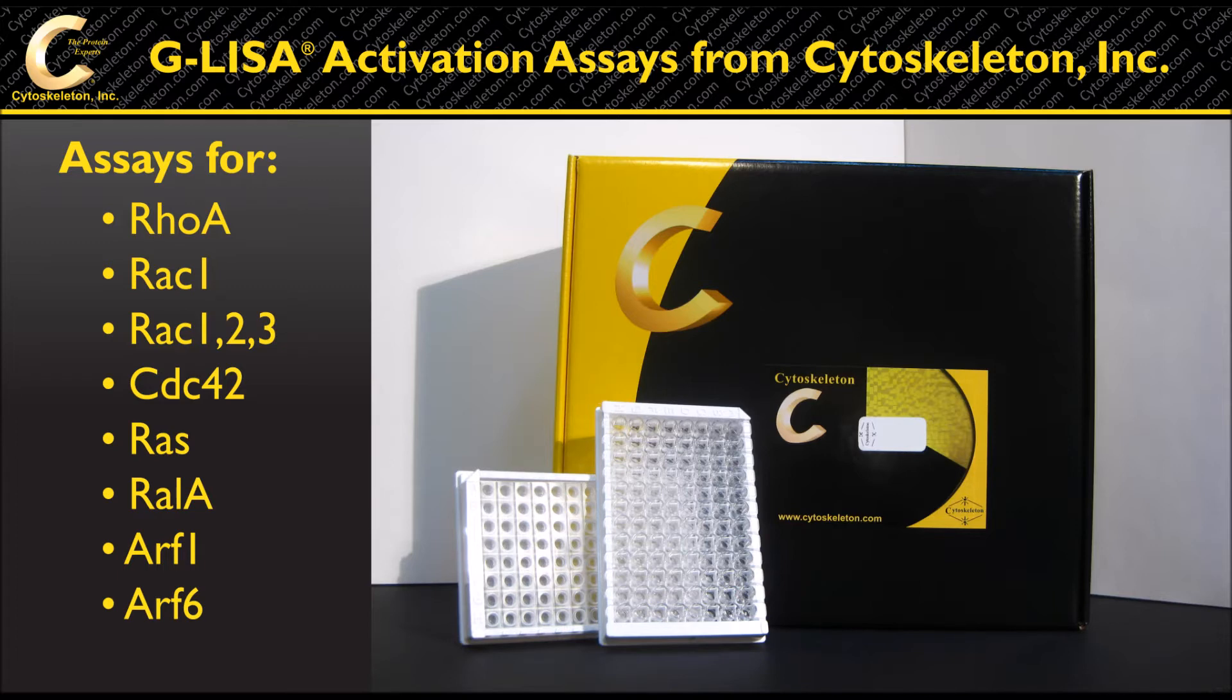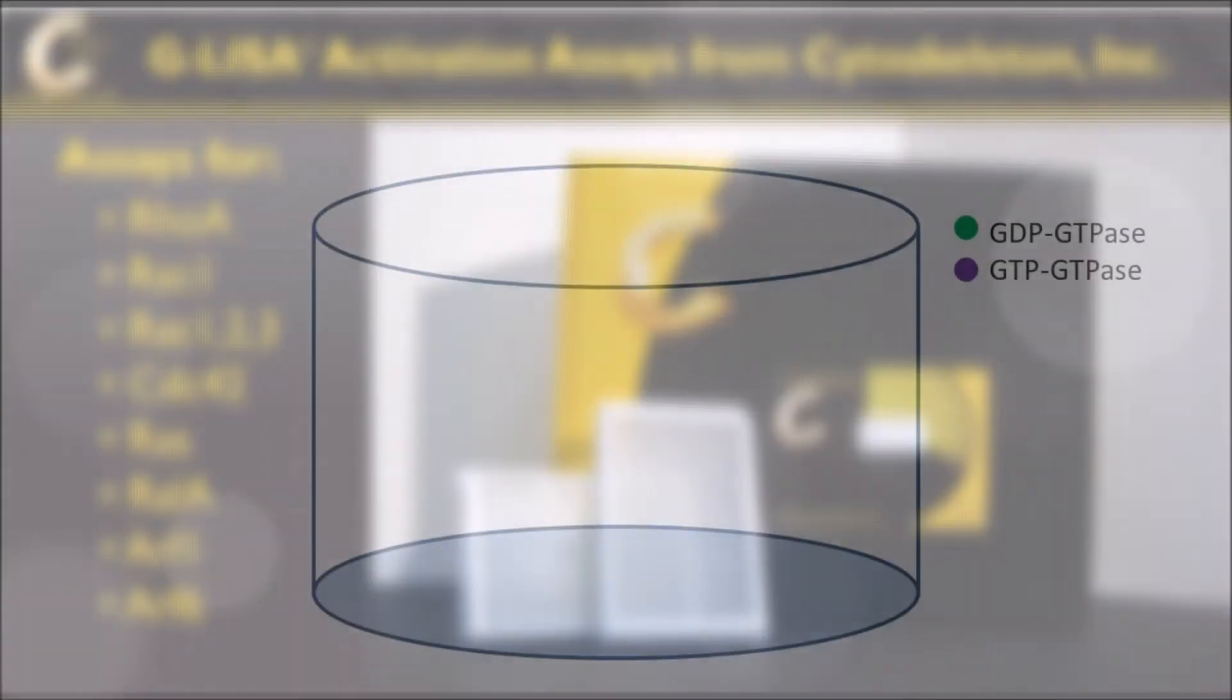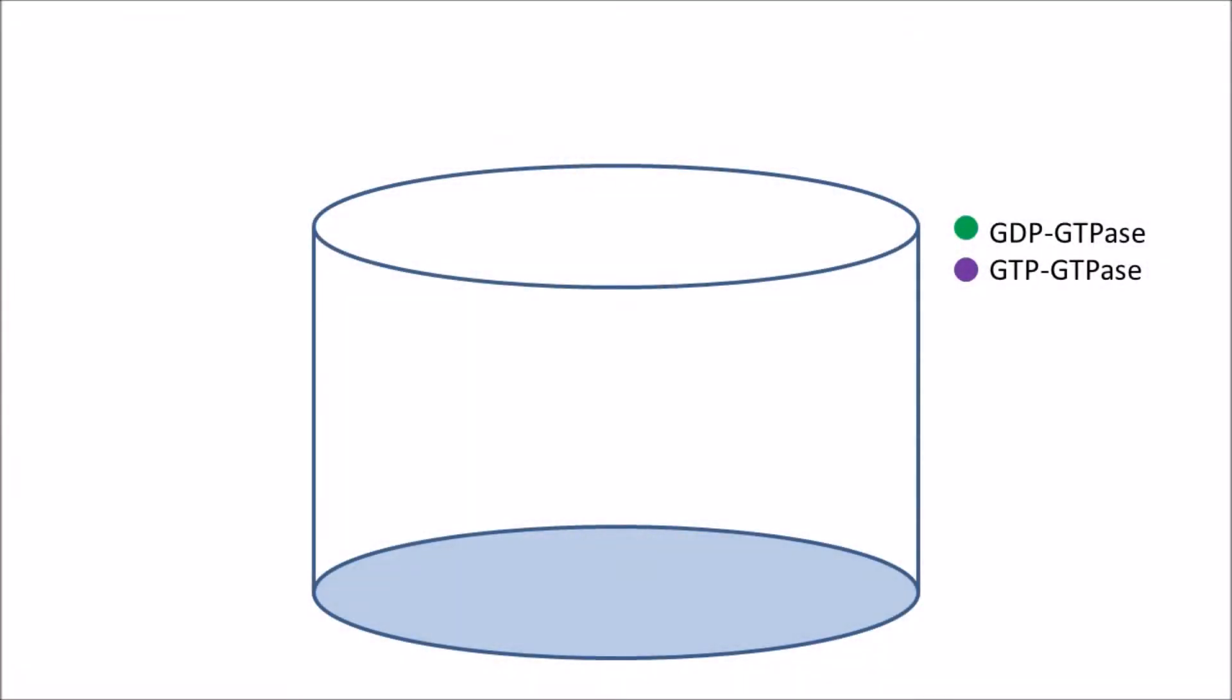G-LISAs measure the active levels of GTPases in tissue and cell lysates. Producing active lysates is an important aspect of preparing for the G-LISA assays. This diagram demonstrates the principle of the G-LISA assay.